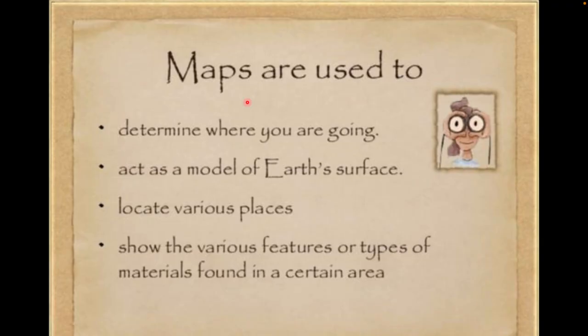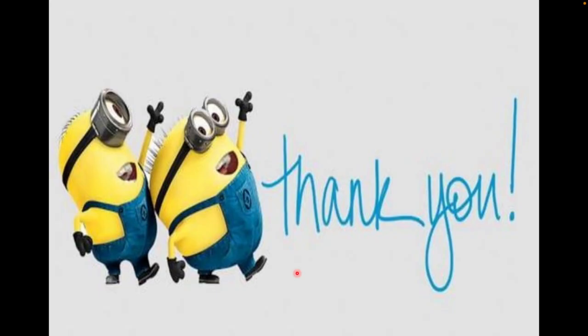Usually, paper map usage has been reduced because of GPS, but we use maps to know directions — where we have to go, to locate places on the surface of the earth, and to find topographical features of a particular place. So that is all about maps. I hope you have a good idea from this video about which types of maps we can use and how. Take care, bye.